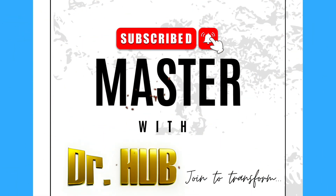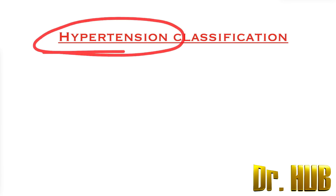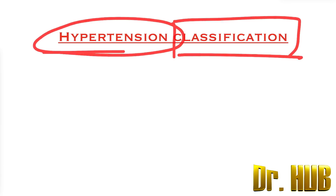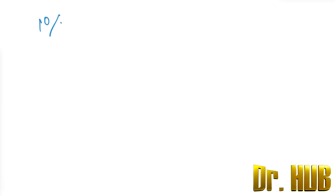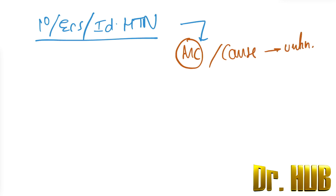Hey guys, this is Dr. Herb. In case you haven't subscribed, please do subscribe for updates. We are looking at hypertension and its classification. The first type is primary, also called essential or idiopathic hypertension. This is the most common variety, and its cause is unknown.